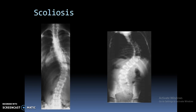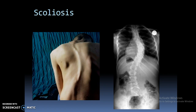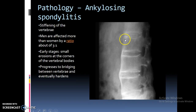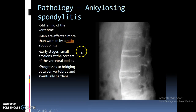A couple of scoliosis images are shown here — a more serious case on the right. Sometimes you can visually see the spine curving if the patient is thin enough. Regarding pathology: ankylosing spondylitis is basically a stiffening of the vertebrae. Men get this about three times more than women. It usually starts with small erosions on the corners of the vertebral body, then bone bridges that area, making the spine super immobile. It's also known as bamboo spine.